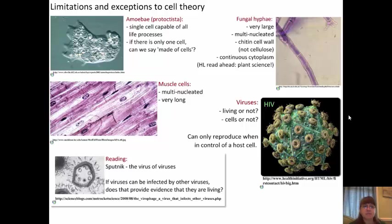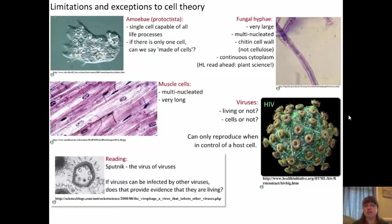Another exception is muscle cells — they are also multinucleated and very long, which is an exception to our cell theory. And then, of course, are viruses. Are they living? Are they not living? Are they a cell? Many consider them to not be living or not be a cell because they cannot reproduce on their own. They can only reproduce when they are in control of a host cell, but there is some debate on if they are their own living entity or if they are a cell themselves.